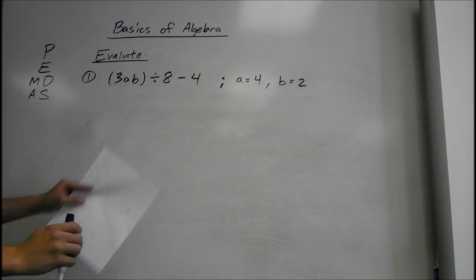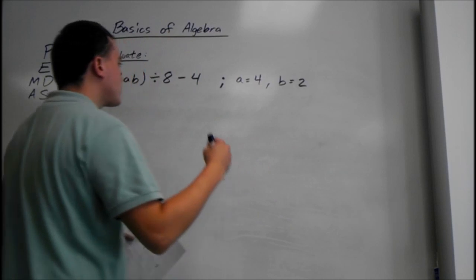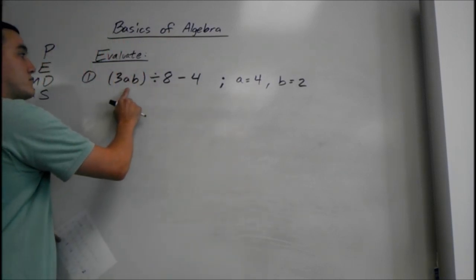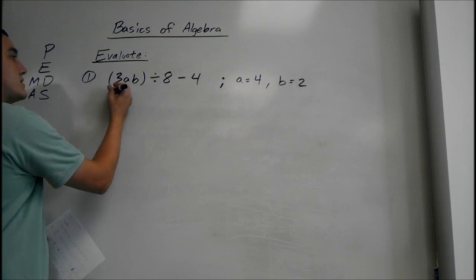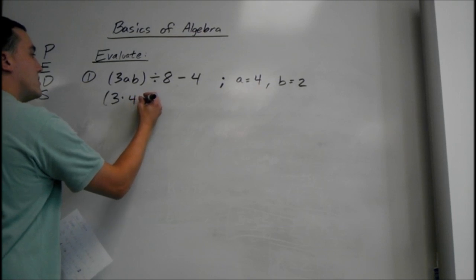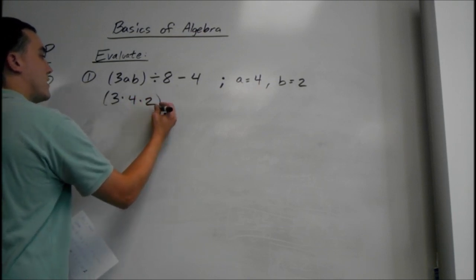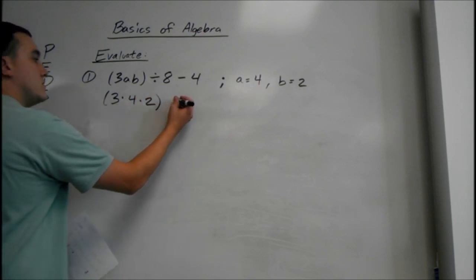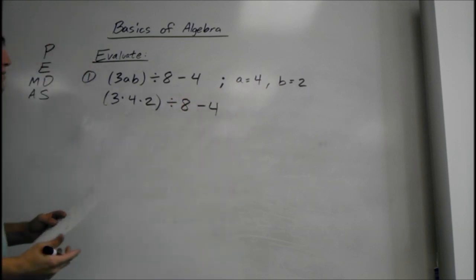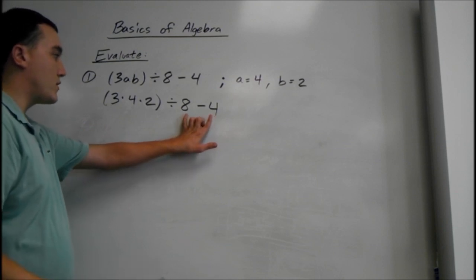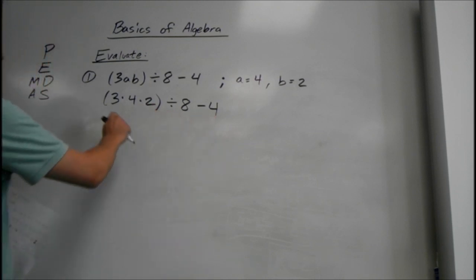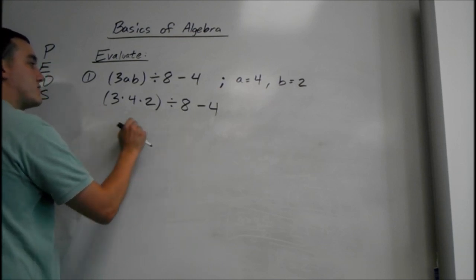So for the first one, whenever they give you numbers to plug in, the first thing you want to do is actually plug them in, then deal with all the math later. So we have 3 times a is 4, times b is 2, and that's in parentheses, divided by 8 minus 4. A lot of people would think to do 8 minus 4 first, but since we're dividing by 8 here, we have to group the 8 with this. So we're going to do the parentheses first.